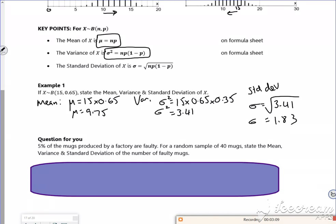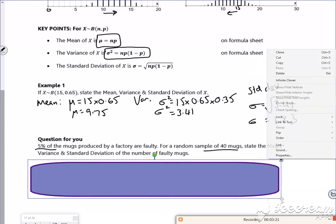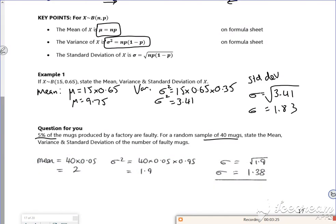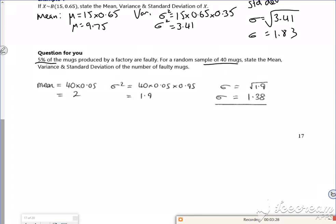There we go. One for you to have a go at. So it says 5% of the mugs produced at a factory are faulty. For a random sample of 40 mugs, state the mean and the standard deviation. So in many ways you don't need to do this anymore because your calculator does all the stuff we need for it. It's kind of from the past when we didn't have that. So there we go. If you wanted to, it would be quite nice to write it down.